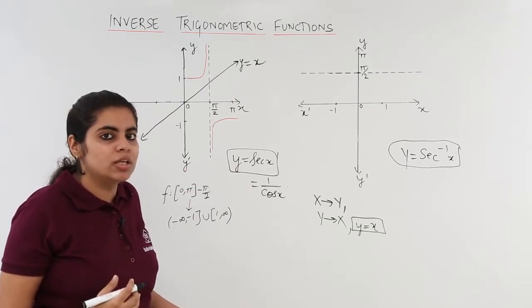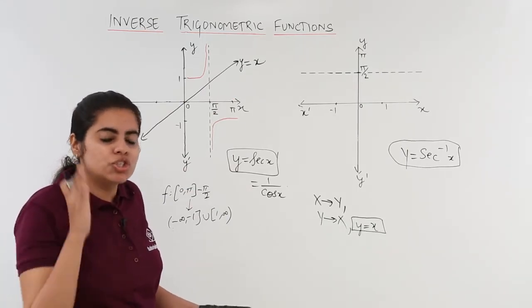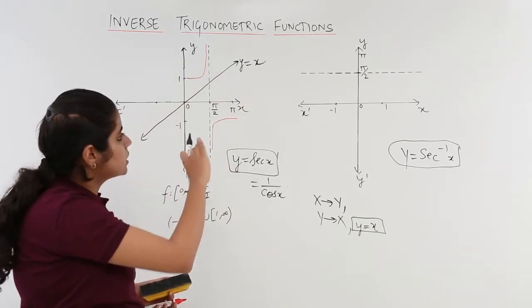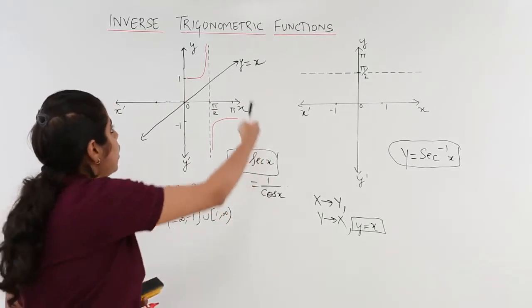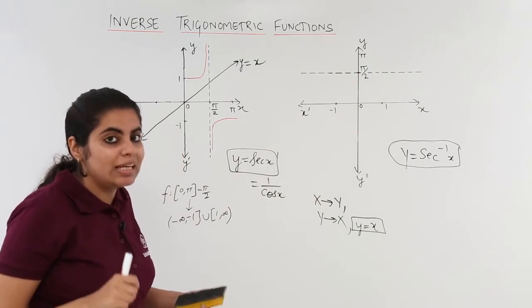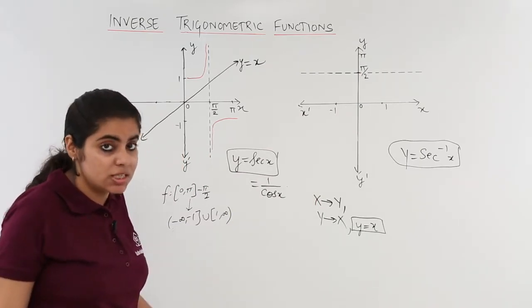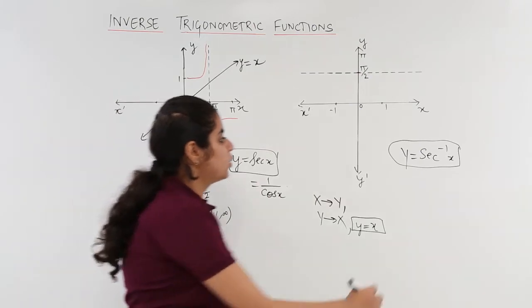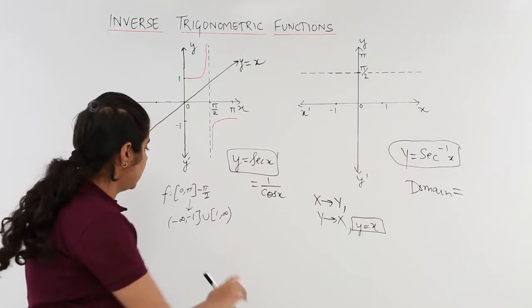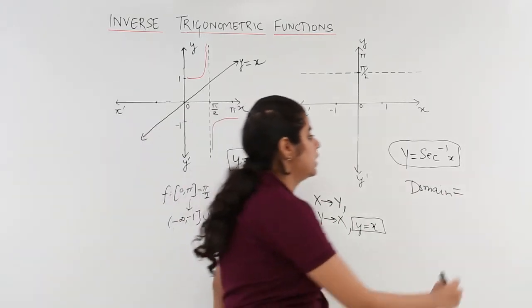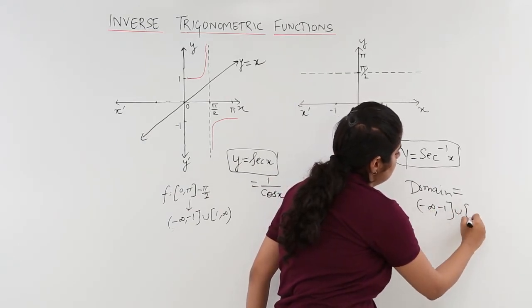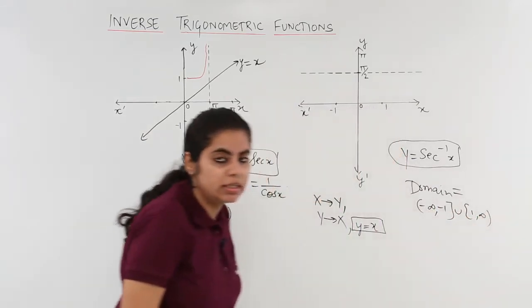You are supposed to just keep it in mind, take the reflection about this line. The dotted line which was vertical now becomes horizontal. My function, domain and co-domain, domain and range part actually changes. Now what becomes my domain? My domain is now what was range here, minus infinity to minus 1, 1 to infinity. So my domain is minus infinity to minus 1, union 1 to infinity. Understood this thing?